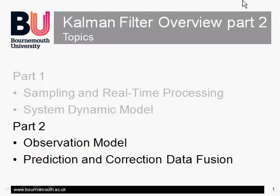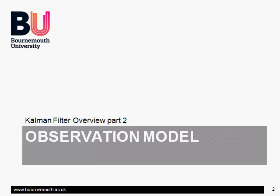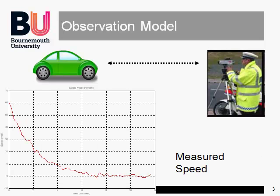Part 2 concludes our overview by looking at a model for the observation data and its fusion with the system model, starting with the observation model. For example, in this instance, we might have borrowed a particularly old and noisy police speed camera to record the car deceleration.